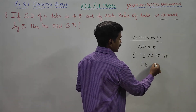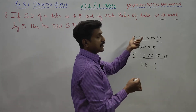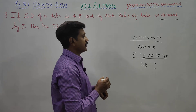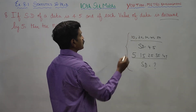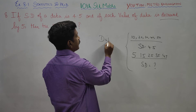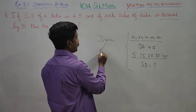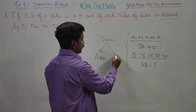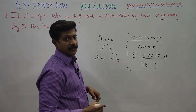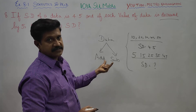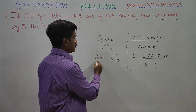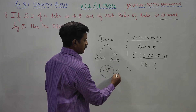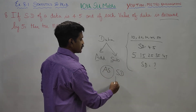When data is decreased by 5 — that is, when we add or subtract a constant from each data value — the standard deviation remains the same. As it is, the standard deviation shows no change.